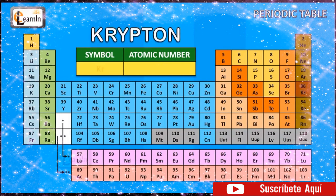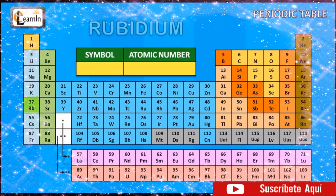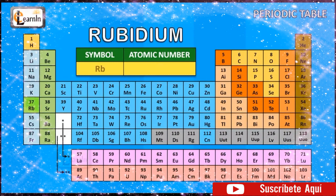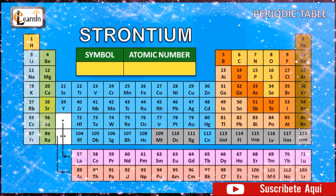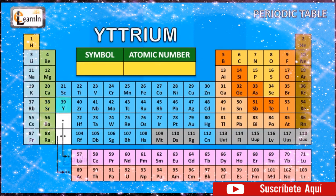The element krypton is represented as Kr and has an atomic number of 36. The element rubidium is represented as Rb and has an atomic number of 37. The element strontium is represented as Sr and has an atomic number of 38. The element yttrium is represented as Y and has an atomic number of 39. The element zirconium is represented as Zr and has an atomic number of 40.